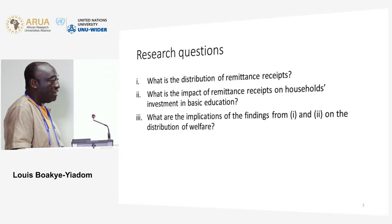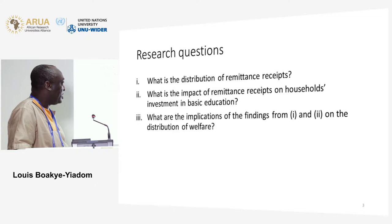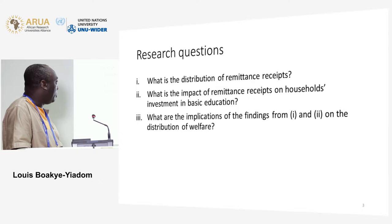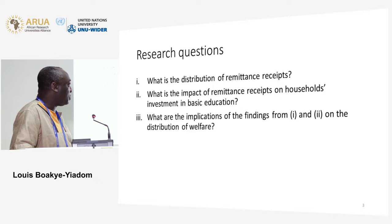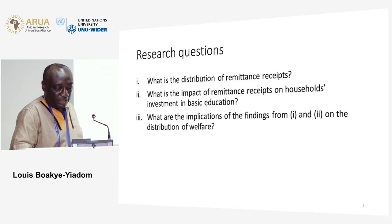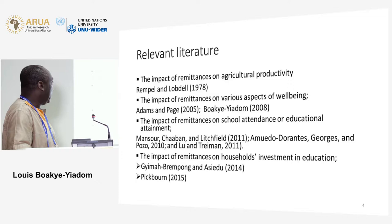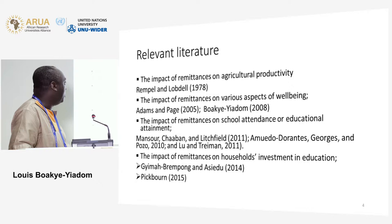These are the research questions. The first one simply looks at the welfare distribution of remittance receipts. Then we pose the question: what is the impact of remittance receipts on households' investment in basic education? And then the third one is basically a look at the implications of the answers to the first two questions on welfare distribution in Ghana.